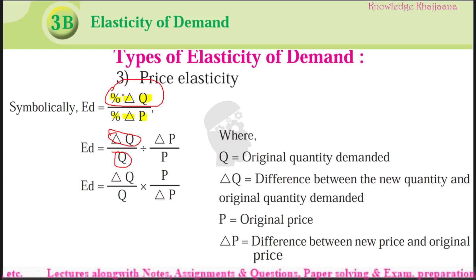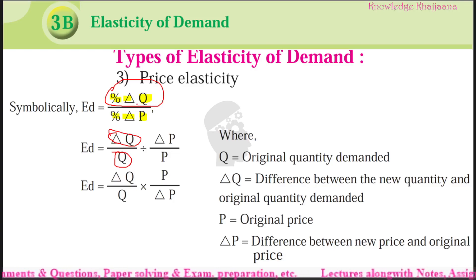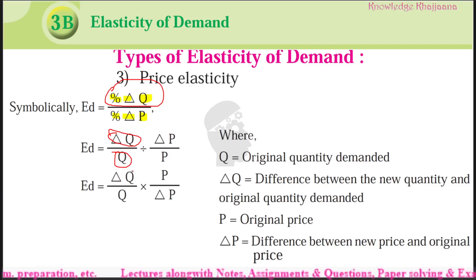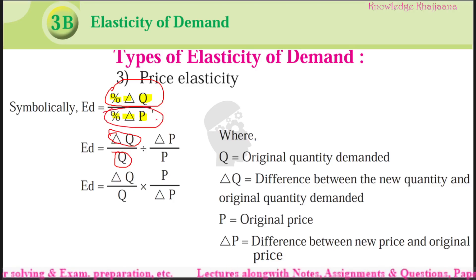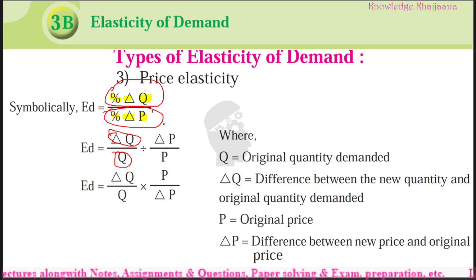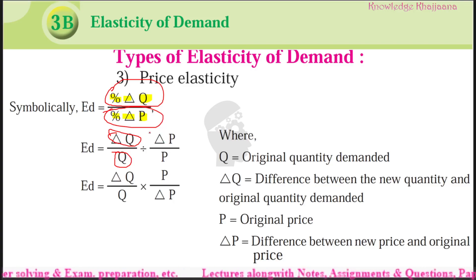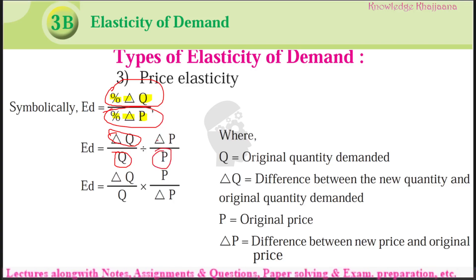So if we simplify percentage change in quantity demanded, it is change in quantity demanded divided by original quantity. And if we simplify percentage change in price, it is change in price divided by earlier price. If we think about the price — earlier price was rupees 200 and now the current price is 150, so what is the change in price? 50.